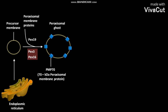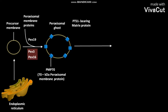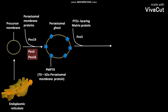The PTS-1, or peroxisomal targeting sequence 1, bearing matrix protein then translocates into the peroxisomal ghost with the help of a cytosolic receptor called PEX-5 and proteins like PEX-14, PEX-10,